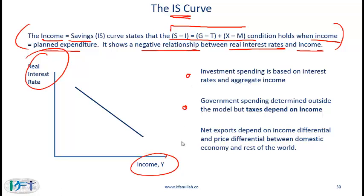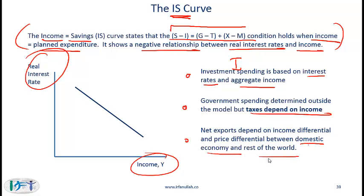Some points used in the derivation of the IS curve: investment spending (I) is based on interest rates and aggregate income — if interest rates are low, investment spending is high, and if aggregate income is high, investment spending is also high. Government spending is determined outside the model, but taxes depend on income. Net exports depend on the income differential and price differential between the domestic economy and the rest of the world.